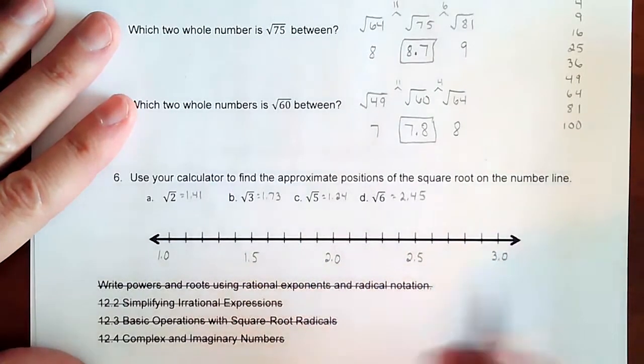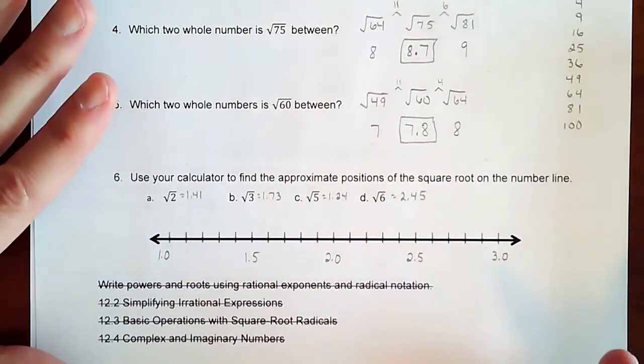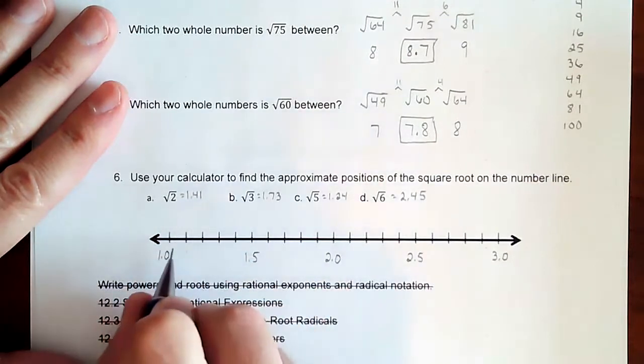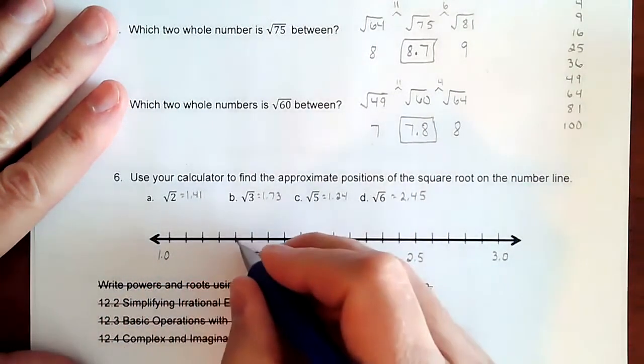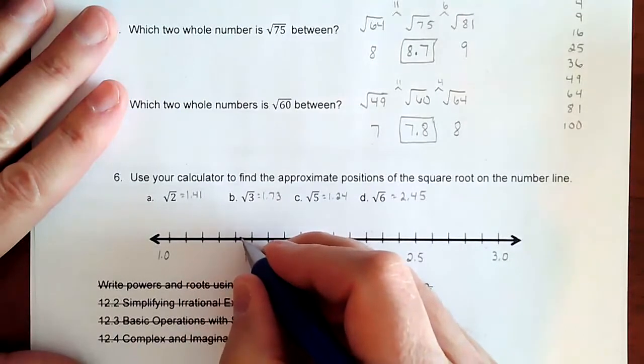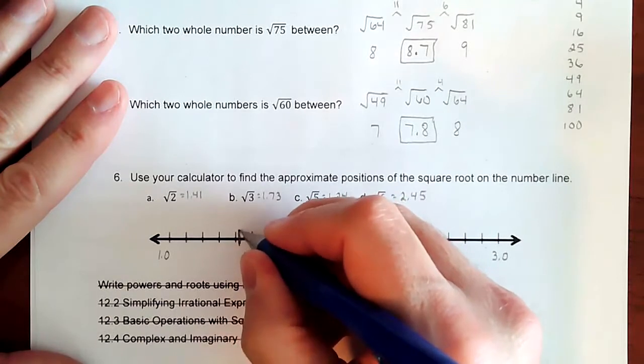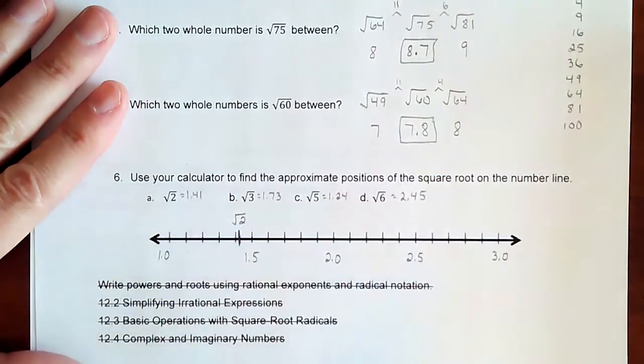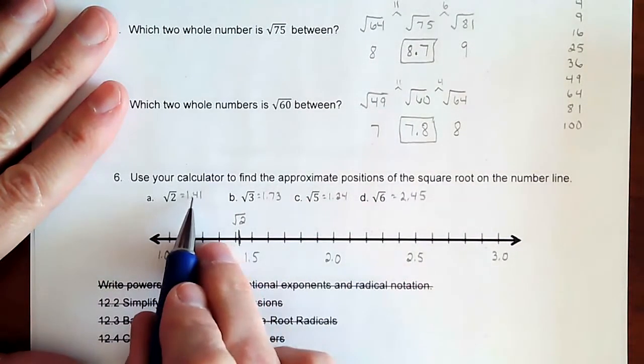So all these decimals are kind of in between here, but I want it to be roughly as accurate as I could. So if I'm going to do 1.41, this is 1.1, 1.2, 1.3, 1.4, but it's not perfectly on 1.4. It's just a smidge off. So maybe it's right there. So that is the square root of 2. It's not exactly on 1.4. So it's 1.4 and some change.